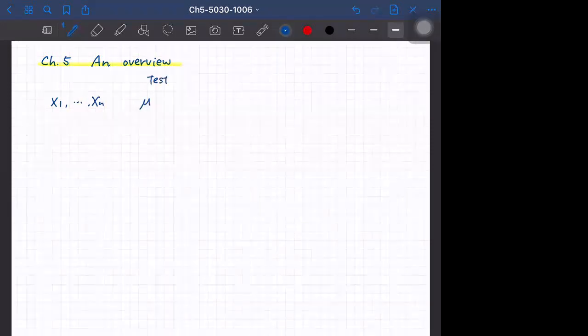The test is whether mu is equal to zero or mu is not equal to zero, or sometimes mu is larger than zero. In general this zero can be a different number. So mu is equal to mu naught is the null hypothesis.